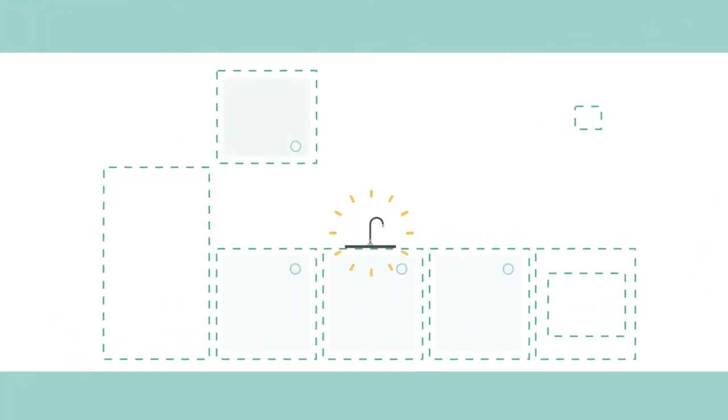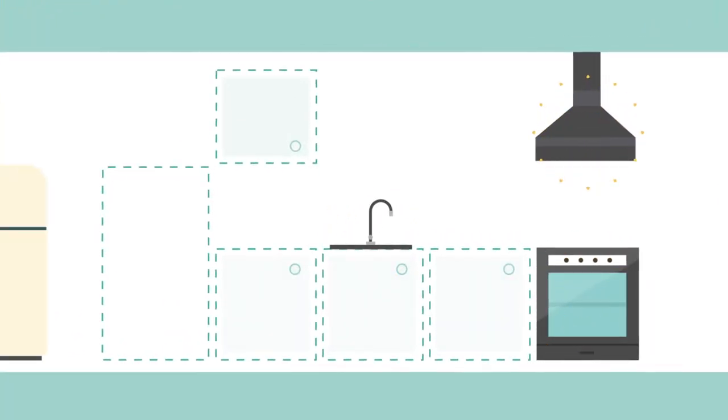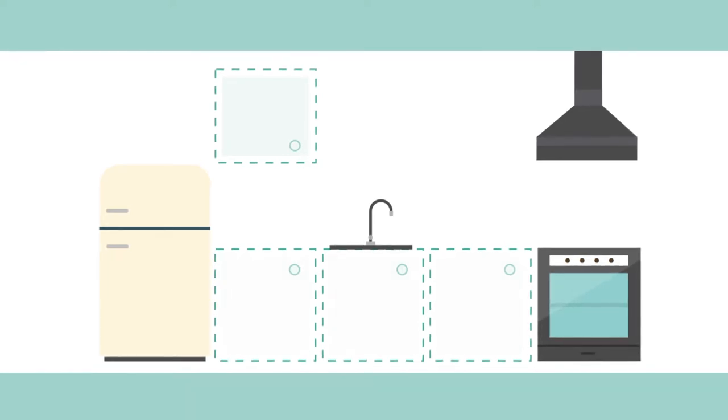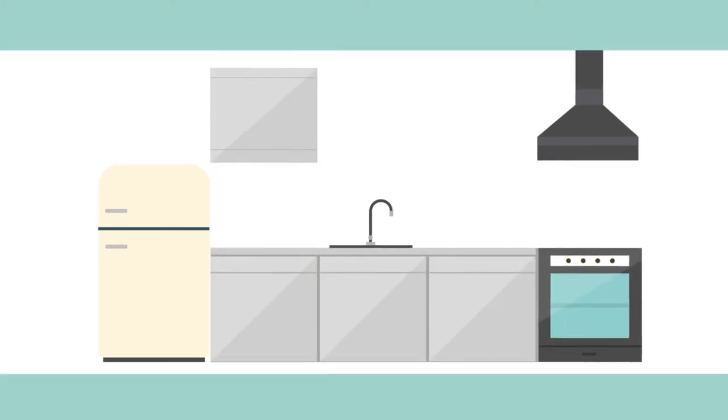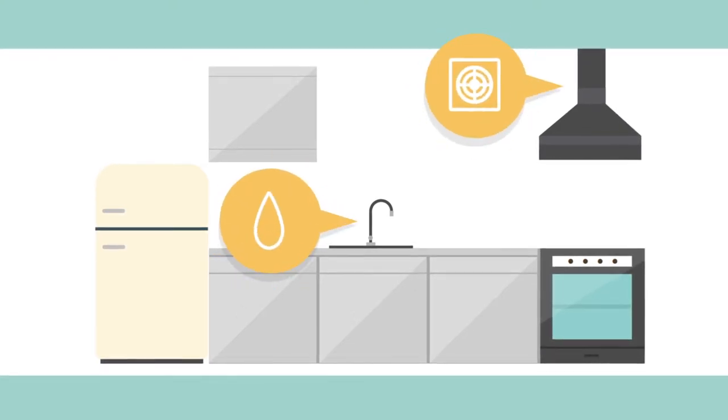Start with your sink, oven and extraction and fridge as these are must-haves and the position of these dictate the rest of your space and start to define your style. Remember you may be restricted with regards to plumbing and extraction.